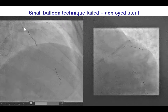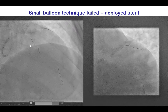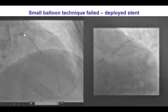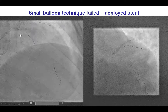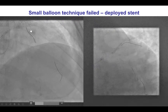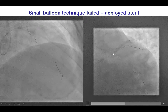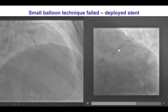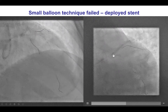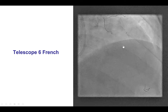We decided not to proceed with further retrieval attempts. There is actually a case — case 167 in the Manual of CTO Interventions — in which snaring and forceful retrieval of a stent caused perforation. In this case we decided to deploy the stent by inserting increasingly larger balloons through the lost stent and deploying it inside the previously placed stent in the proximal LAD.